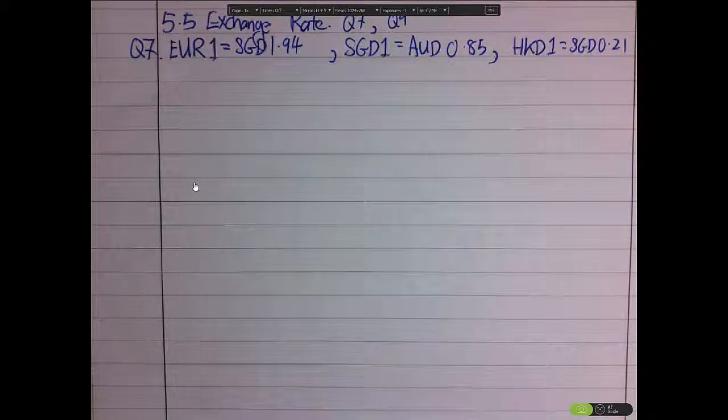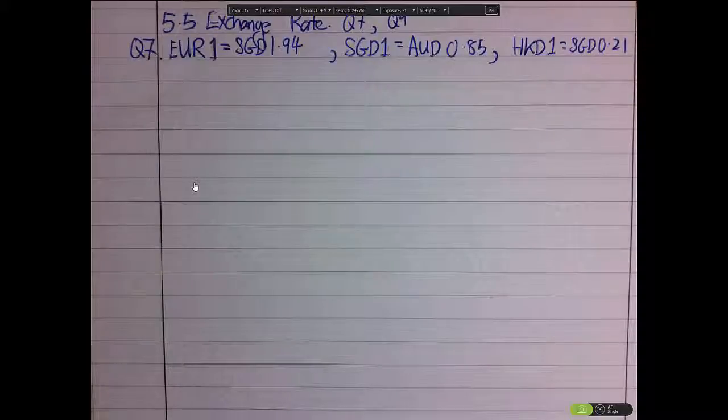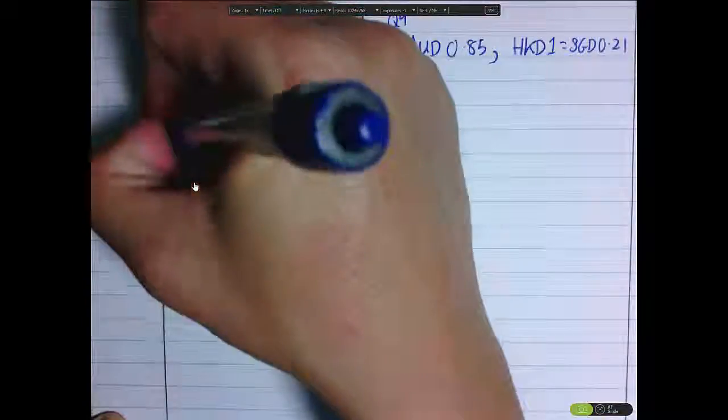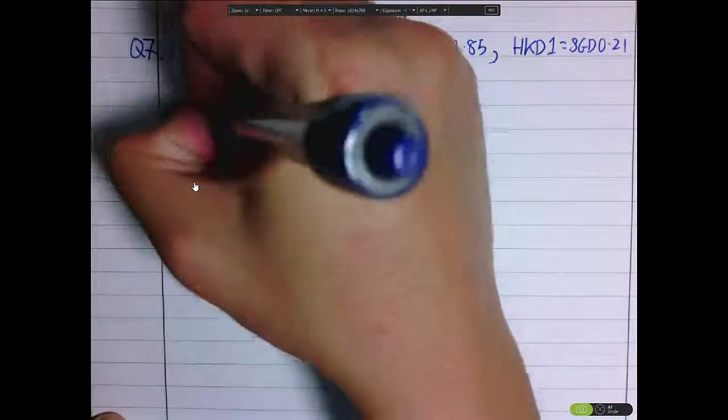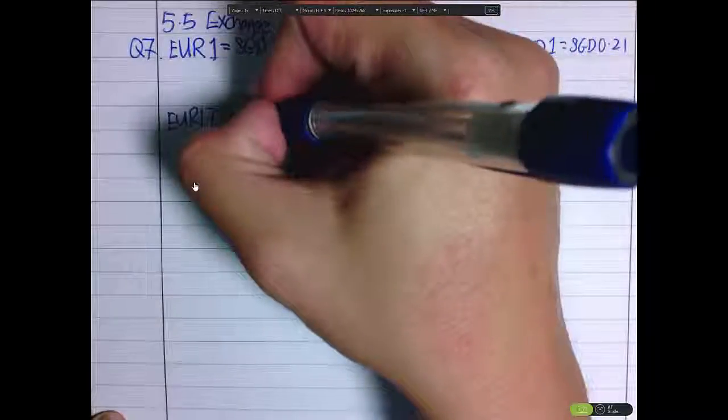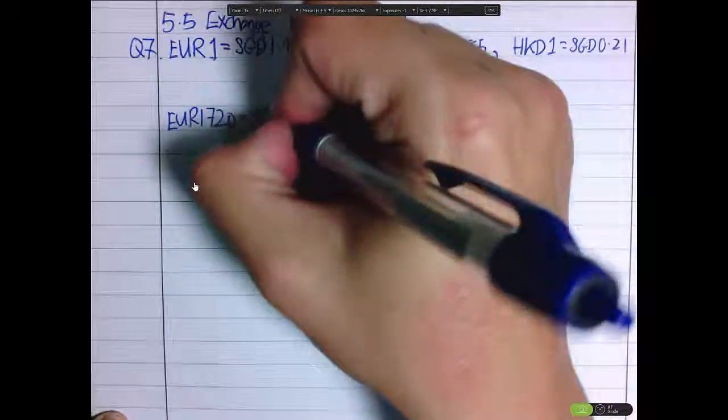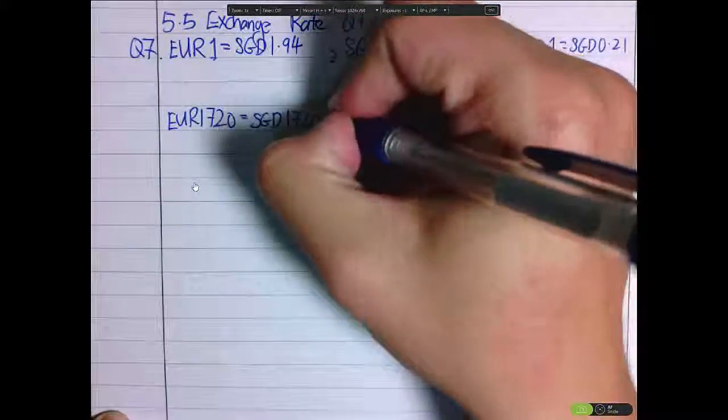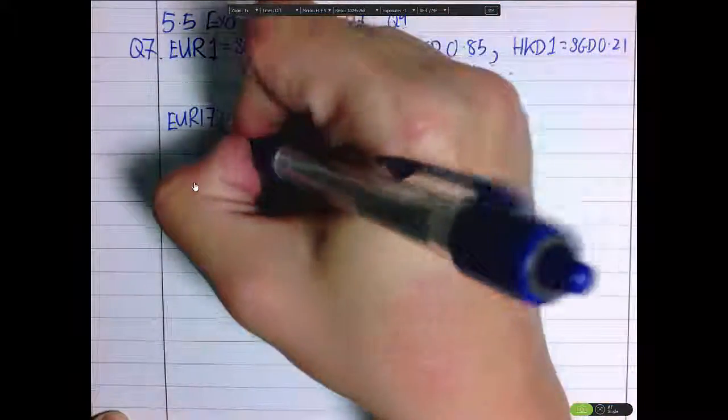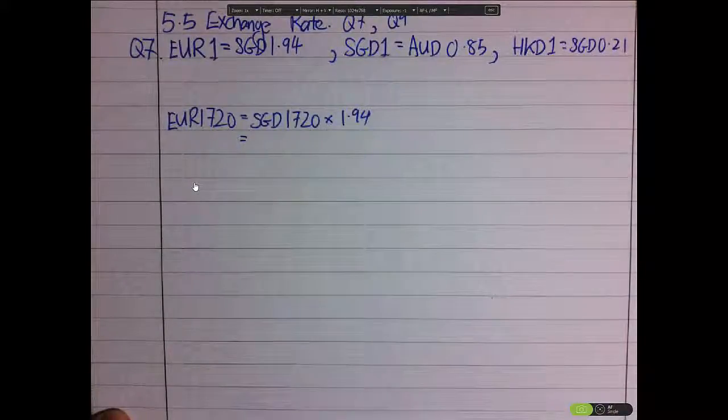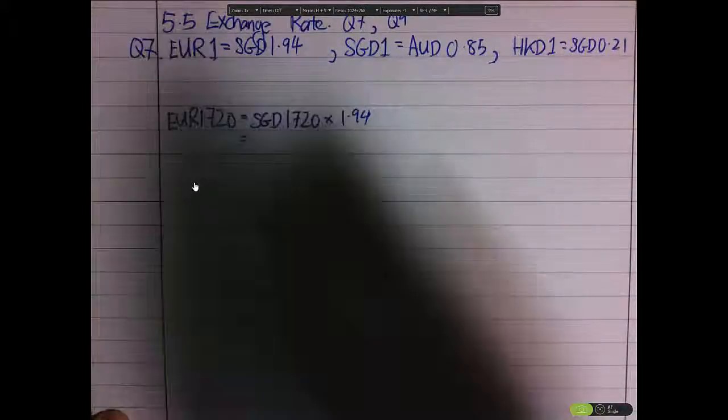We have to calculate how much of the account she has in Singapore dollars. So I'll say that EUR 1720 equals to SGD 1720 times 1.94. So in this case she will have SGD 3336.80.